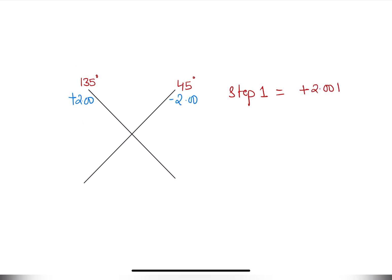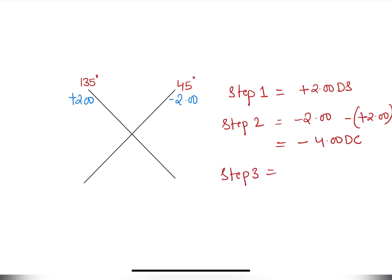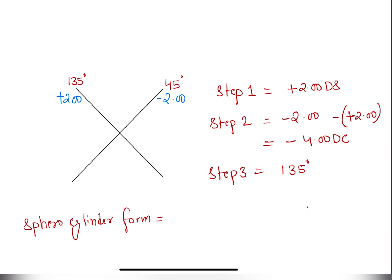We're going to take plus two diopters as our spherical value. Step two: we subtract our spherical value from the other principal meridian which was not taken as the sphere, giving us a total of minus four diopters of cylinder. Step three: the axis will be towards the principal meridian which was taken as the sphere — in our case, that is 135 degrees.